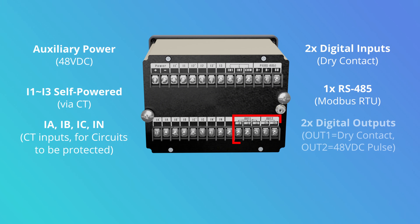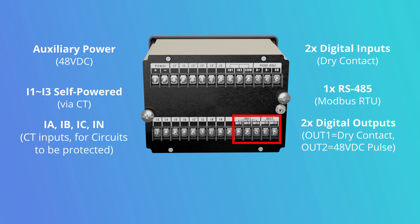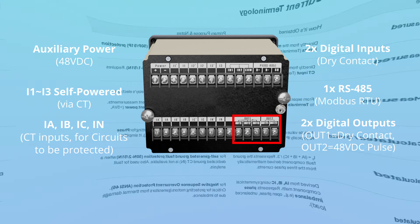Lastly, there are two digital output ports. OUT1 is a dry contact DO with either normally open or normally closed circuit, normally used for alarm signals, etc. OUT2 is a port for active pulse output used for tripping your breaker, which you need to make sure matches your trip coil voltage.